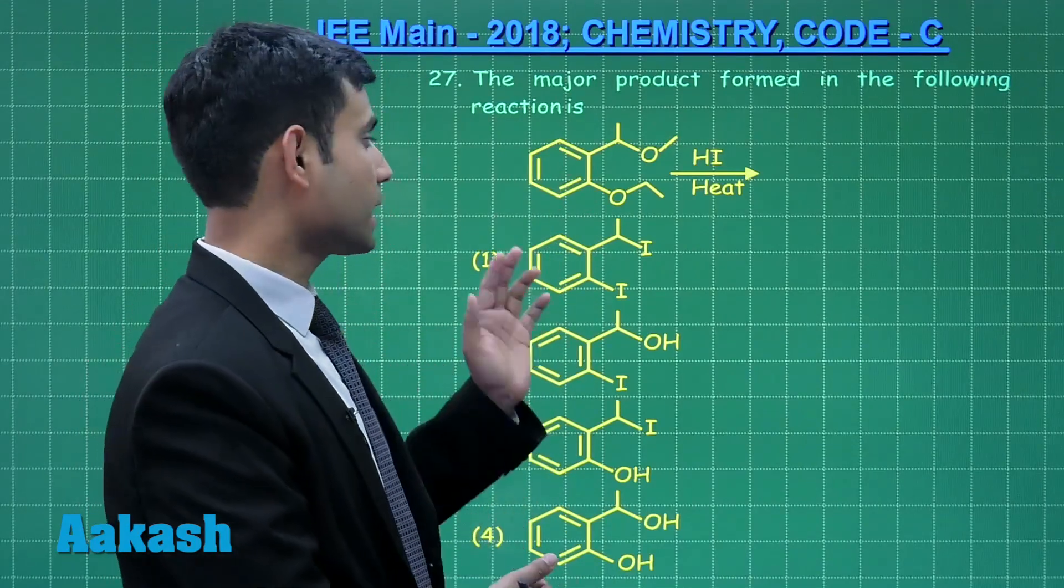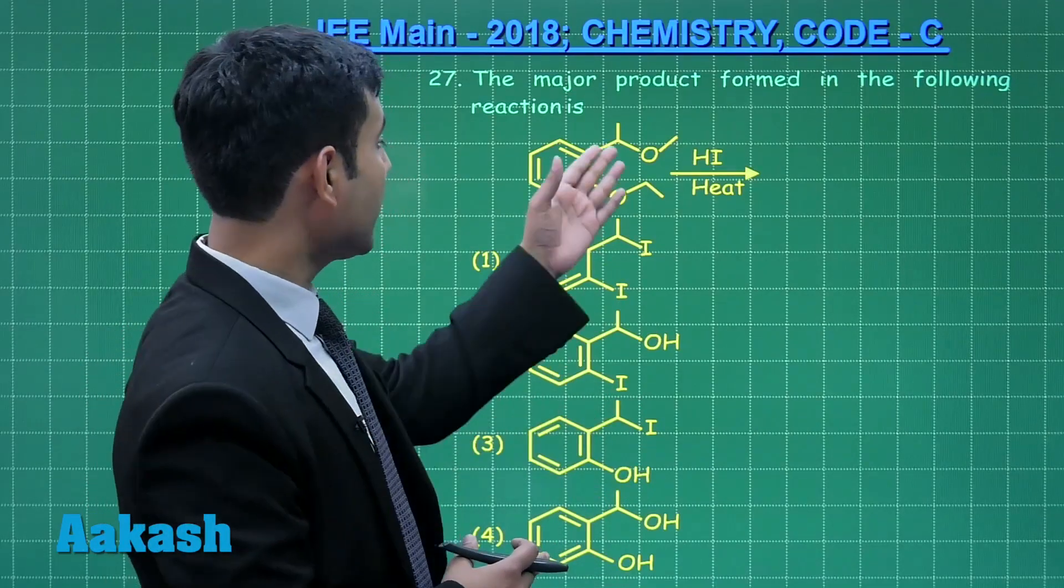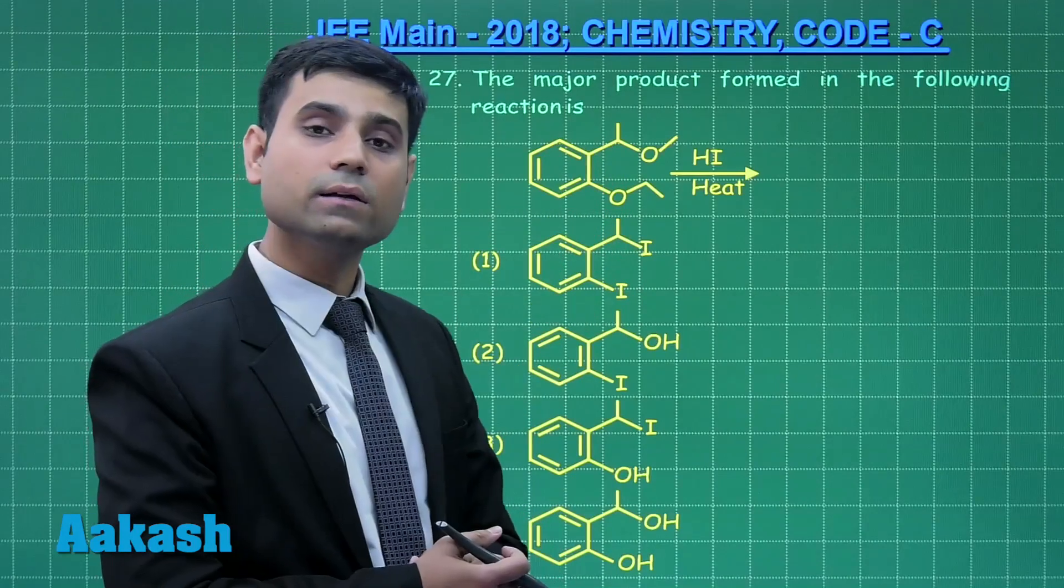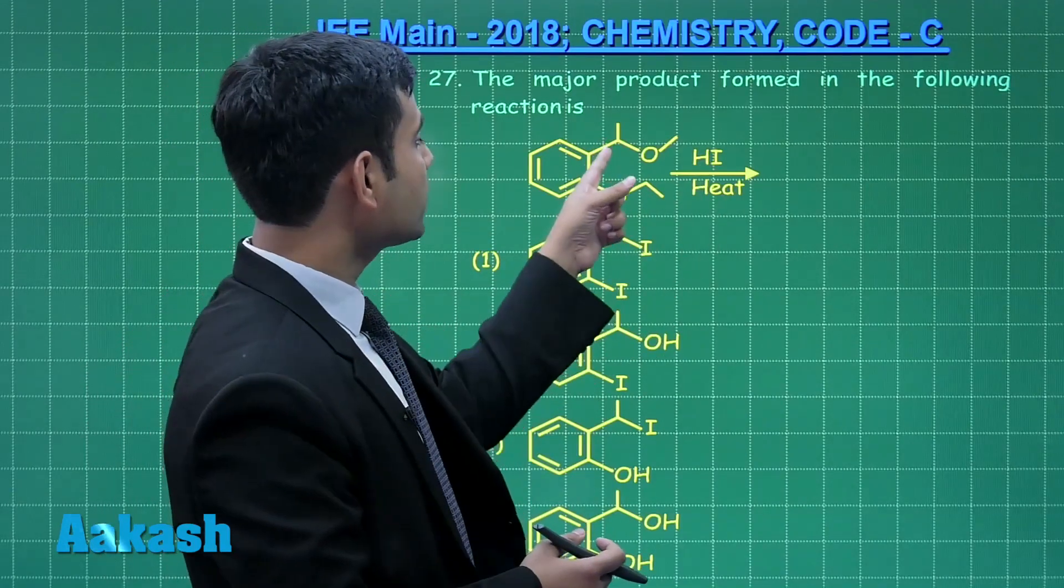Also it is secondary, so carbocation formed here will be a stable carbocation, hence at this position will have SN1 reaction. So iodine will be substituted to this carbon.